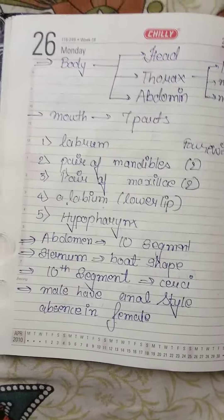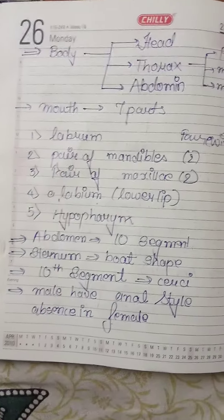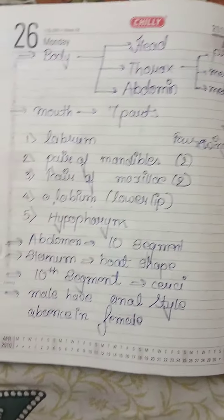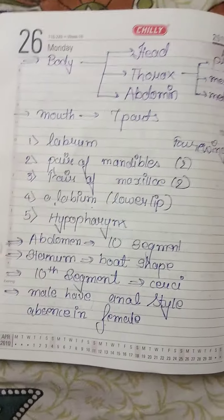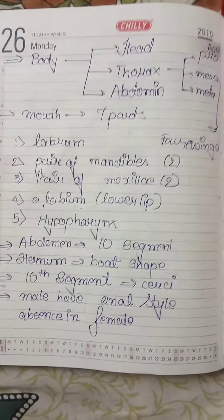The seven mouth parts are: first is labium, pair of mandibles, pair of maxillae, labium and hypopharynx.